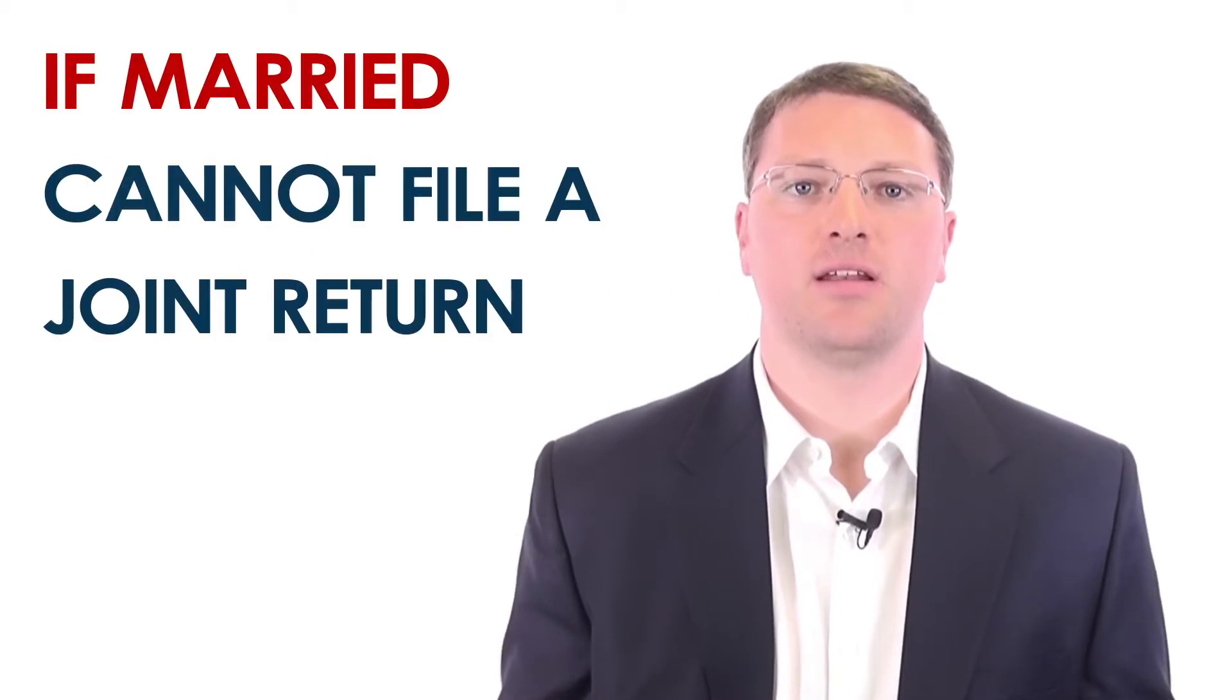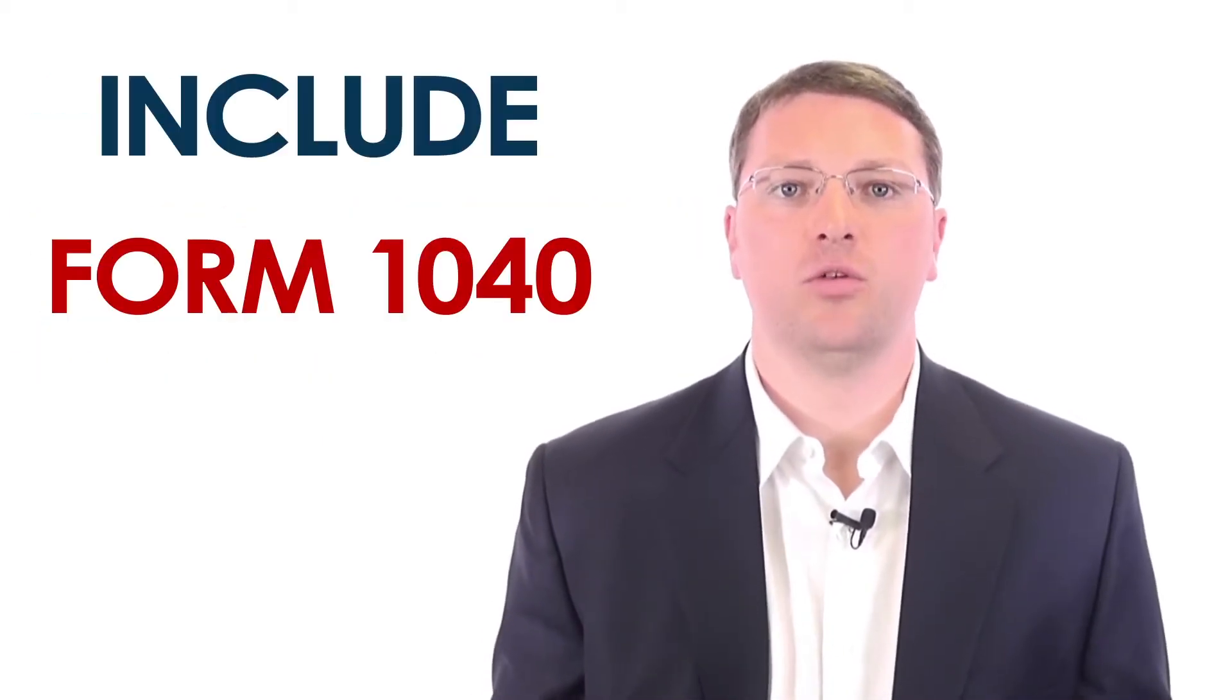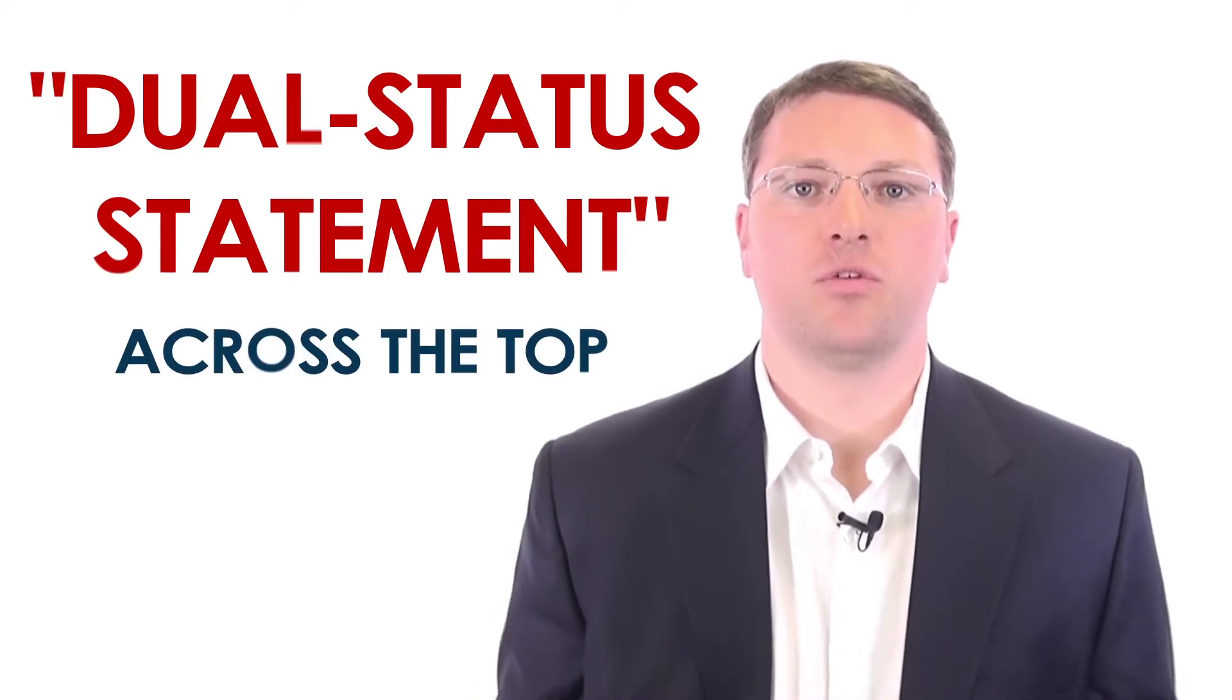When filing as a dual status alien, different rules apply for the part of the year you were a tax resident of the United States and the part of the year you were a non-resident. A dual status taxpayer cannot use the standard deduction and if married cannot file a joint return. You must file Form 1040-NR or 1040-NR-EZ and write dual status return across the top. Include Form 1040 with your return to show the income and deductions for the part of the year you are a resident. Write dual status statement across the top. For detailed instructions, see Chapter 6 of IRS Publication 519, U.S. Tax Guide for Aliens. Also, note that if you renounce your U.S. citizenship during the year, you will also be considered a dual status alien.